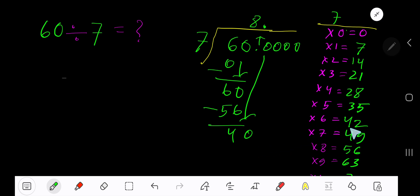6 times would be 42, which is too much, so 5 times. 5 times 7 is 35. Subtract to get 5. Bring down another 0.